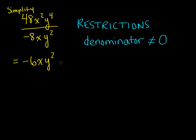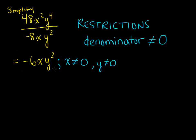Looking at this denominator, if x was equal to zero that would make the whole denominator zero because it's multiplied by everything else there. So we do not want an x value of zero. We also don't want a y value of zero, because if y equals zero the whole denominator would equal zero again. When we state our simplified answer we state the simplified answer as well as any restrictions — both pieces together form our answer. You can't have the simplified answer without the restrictions, and you can't have the restrictions without the simplified answer.